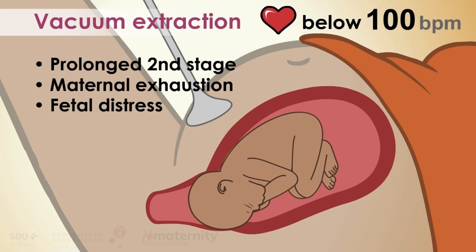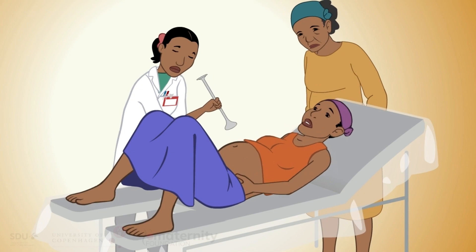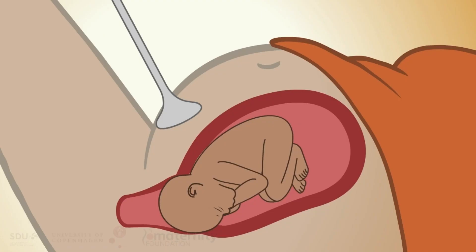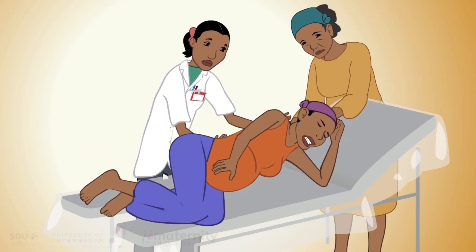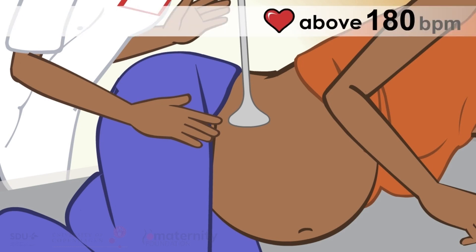In the second stage, the fetal heart rate should be assessed after each contraction. If the fetal heart rate is above 180 or below 100, roll the mother to the left side and continue to assess fetal heart rate. If it is unchanged after a few minutes, delivery must be expedited.